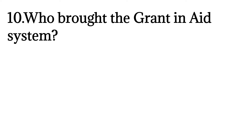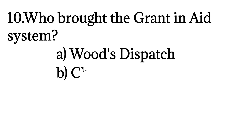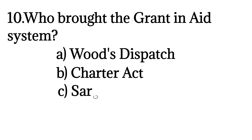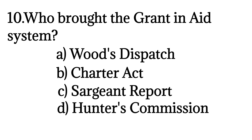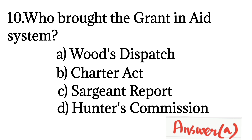Who brought the grant and aid system? Options: Wood's Dispatch, Charter Act, Surgeon Report, Hunter's Commission. The correct answer is Wood's Dispatch. The grant and aid system means it provides funds from one level of government to another level of government for specific purposes.